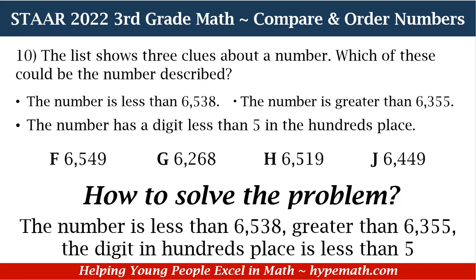Looking at G: both numbers have a six in the thousands place, and G has a two in the hundreds place. Since our number is less than 6,538, G is still in the running. H is still in the running too, because in the thousands and hundreds place the numbers are the same, and one is less than three. J is also still in the running because four is less than five. So right now the only answer we can mark out is F.